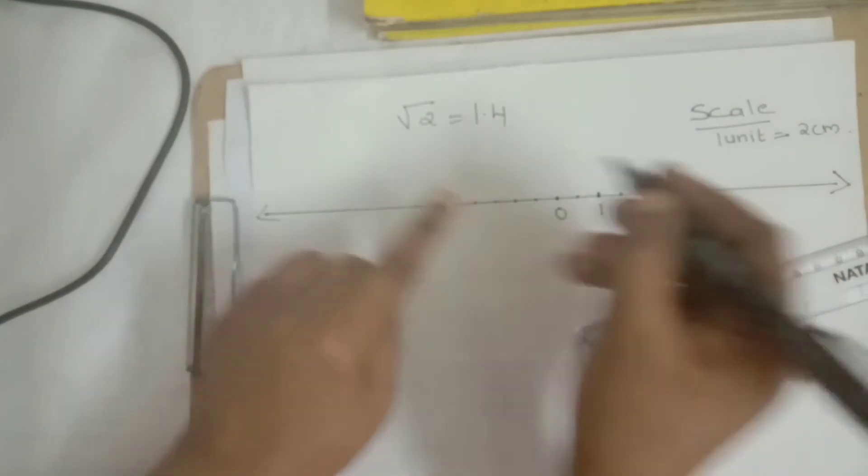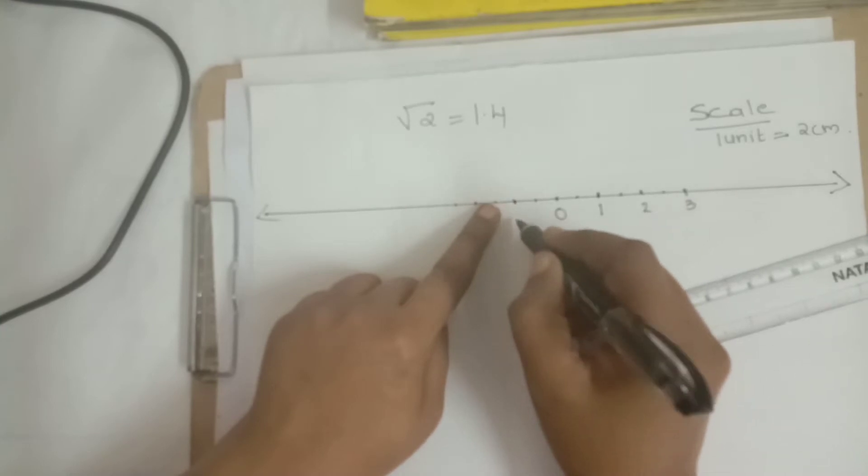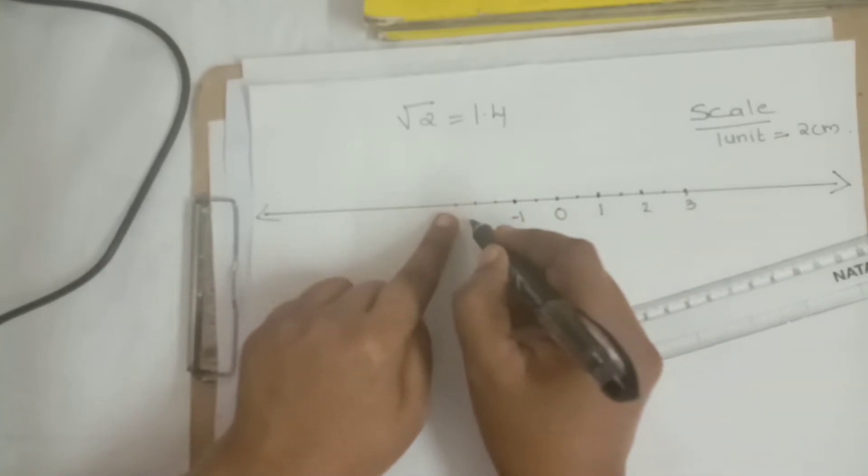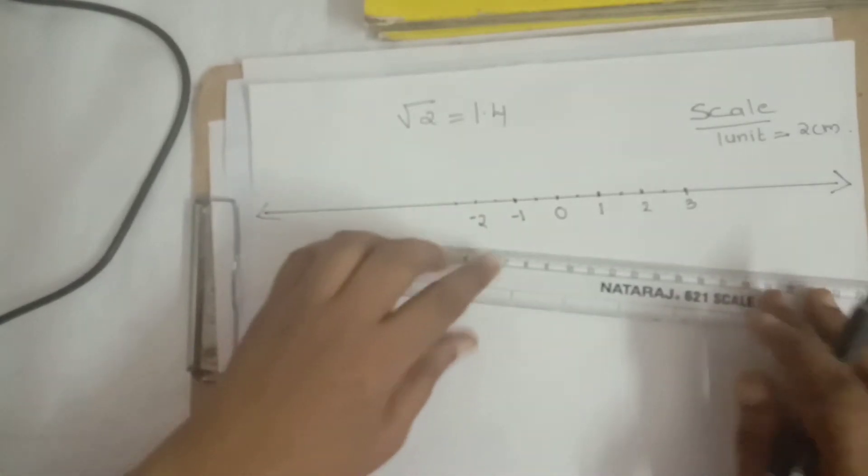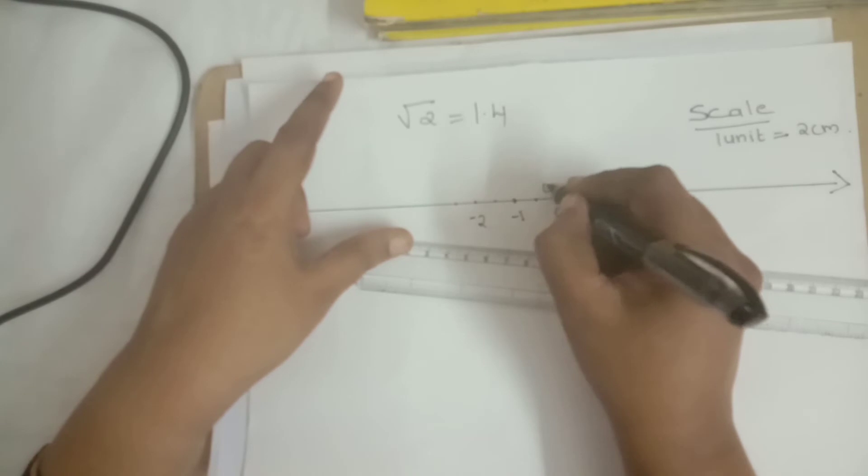Then on the left side part also, 2 cm mark as 1 unit. But this side is negative. Here also 2 cm mark it as the next unit. So minus 1, minus 2, like this. Then this 0, we can give the alphabet O.